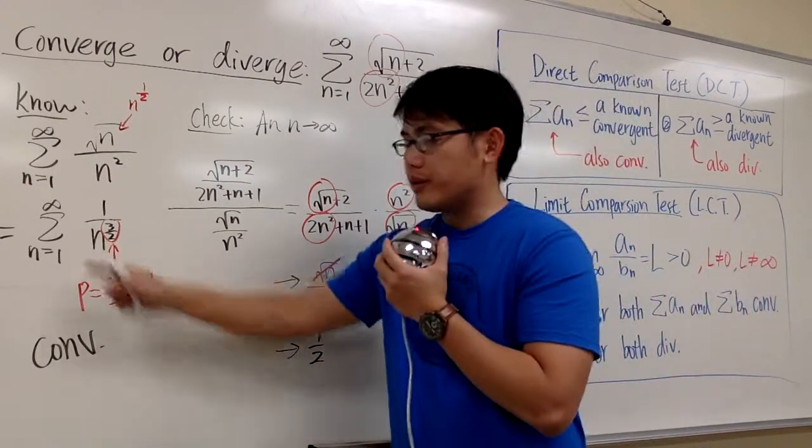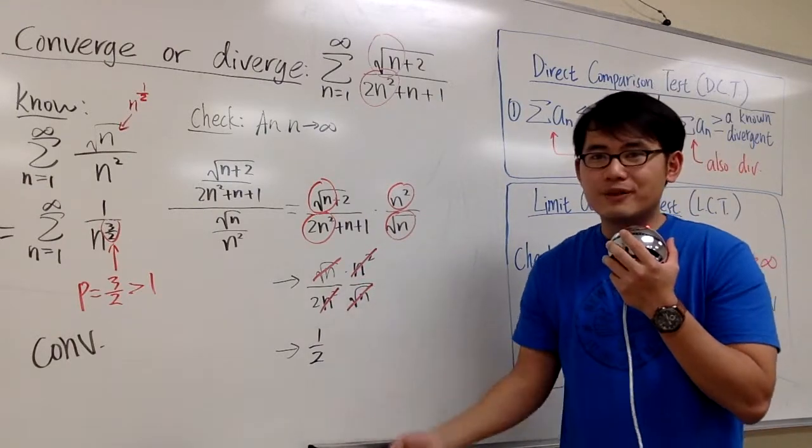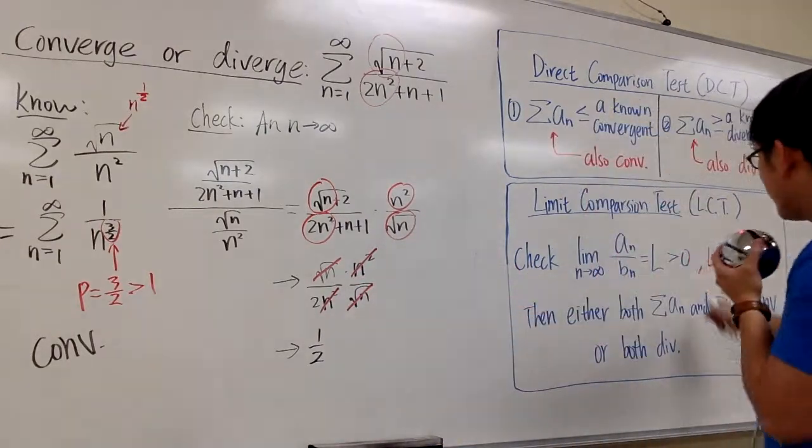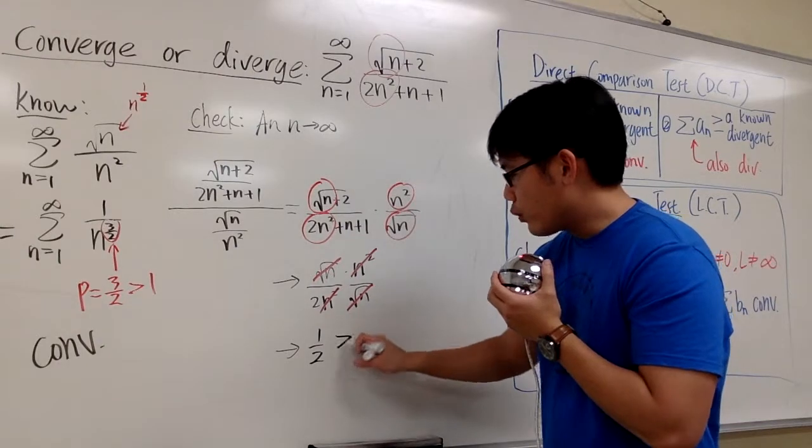And then earlier, if we include the 2 right here, you still just get a finite answer. As long as you get a finite answer that's bigger than 0 and it's not infinity, we get to draw a conclusion. 1 over 2, of course, is greater than 0.